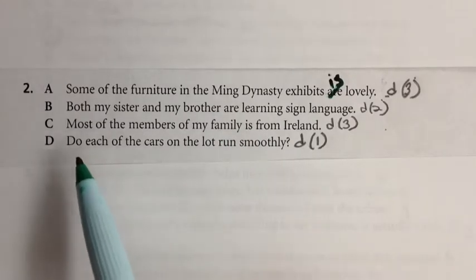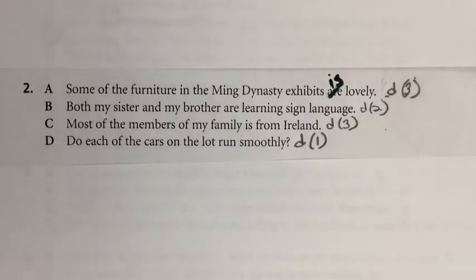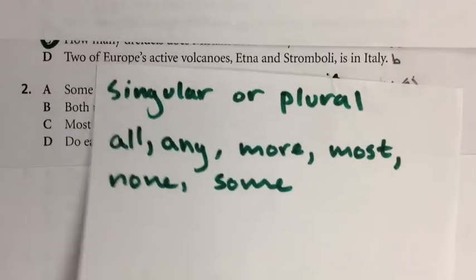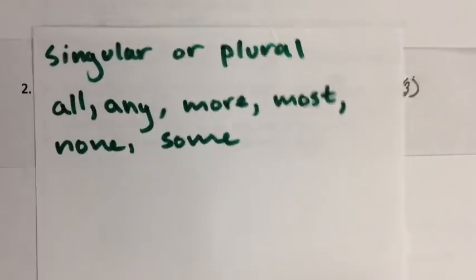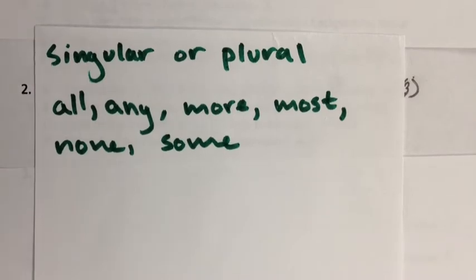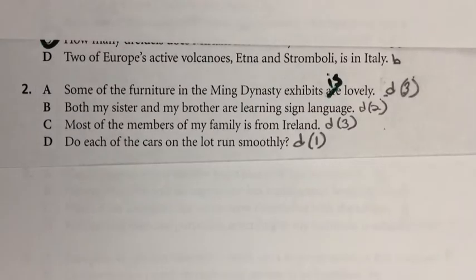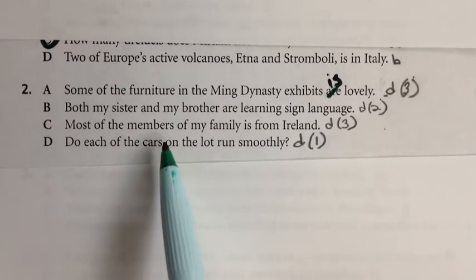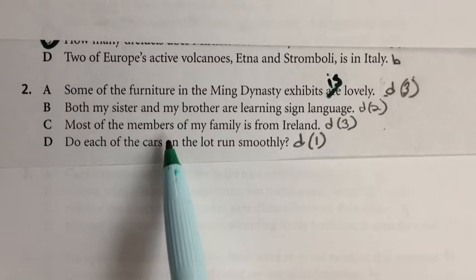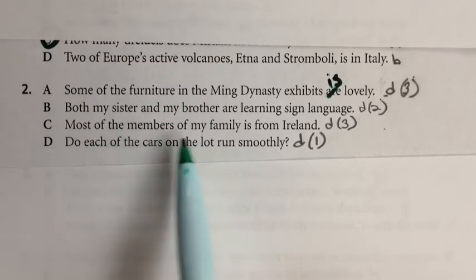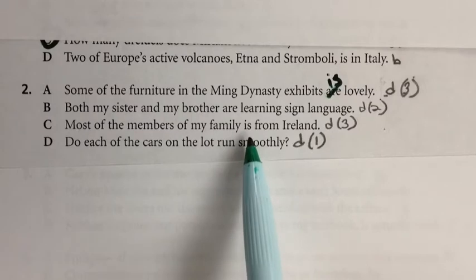Sentence C uses 'most,' which is on the singular-or-plural list, so we have to keep reading. 'Most of the members' — members is plural, so we want a verb that does not end in S. 'Most of the members of the family is' — that's incorrect. This should be 'most are from Ireland.'